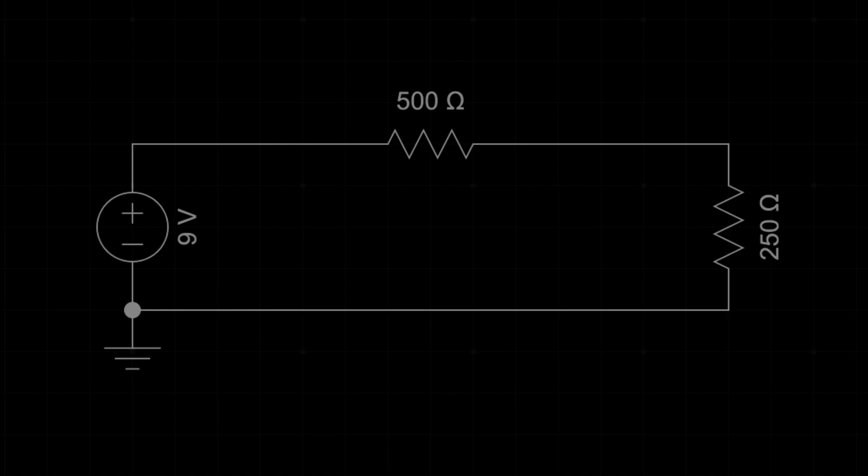Since we still want a voltage of 3 volts, let's use the same ratio but multiply by 50. This gives us 500 ohms for R1 and 250 ohms for R2.